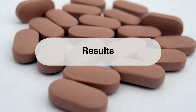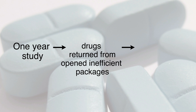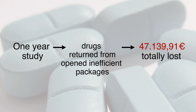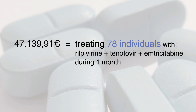We studied the amount of drugs returned during a period of one year in our pharmacy. We saw that 47,139 euros were totally lost because they came from packages in Class C and D boxes. This would be the equivalent to treating 78 individuals with a standard co-formulation of rilpivirine, tenofovir, and emtricitabine during a month.